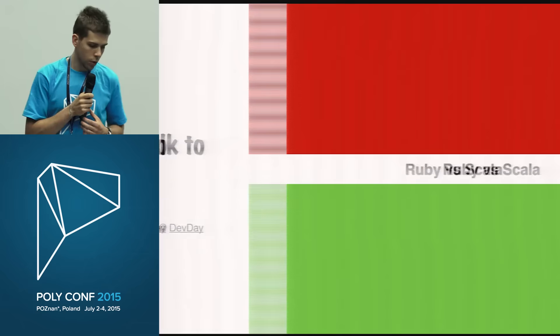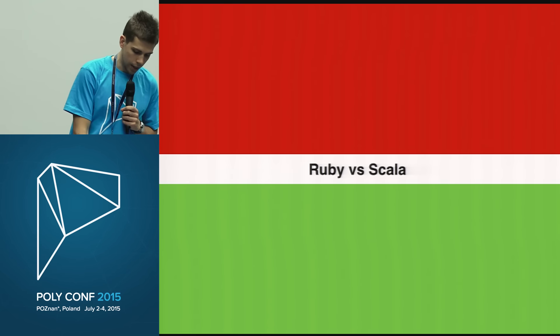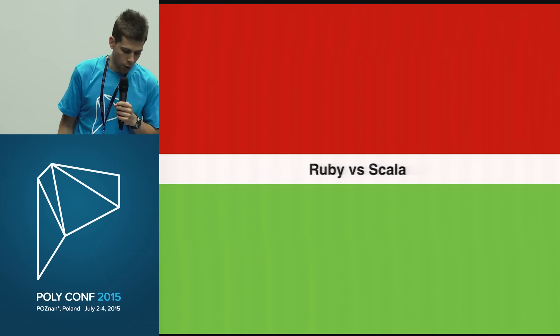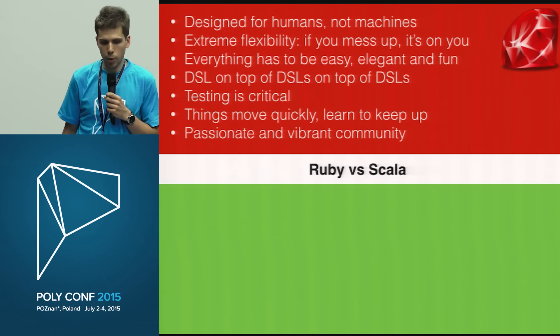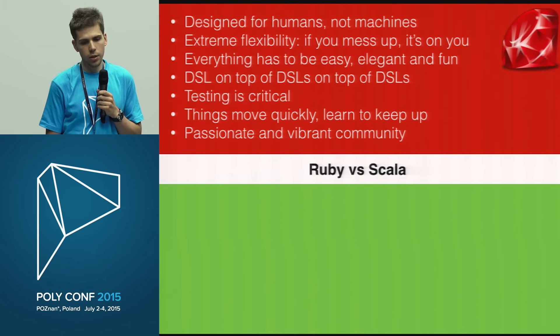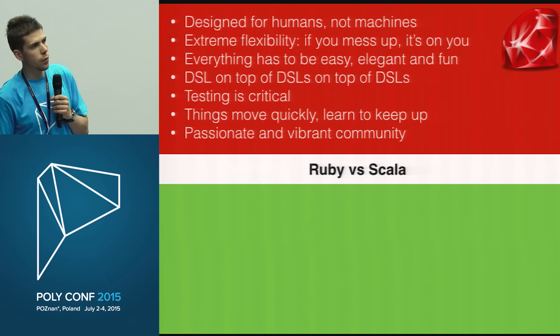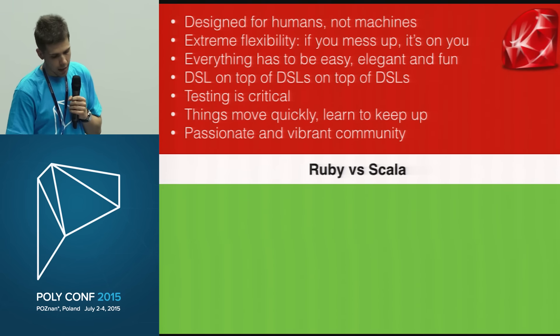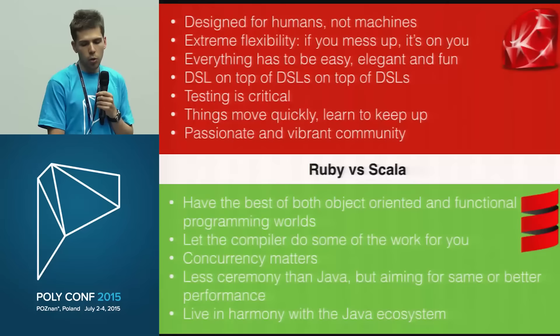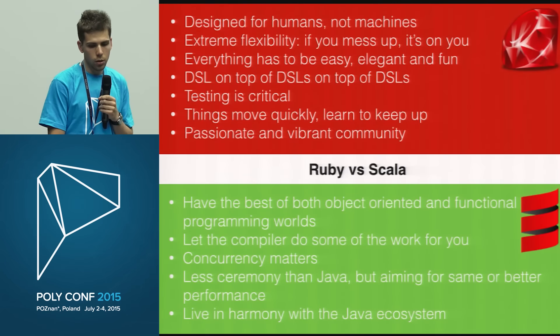I'd like to compare Ruby and Scala at the same time. These languages are created for different purposes. Ruby is pretty simple, designed for simple stuff with quite a nice DSL, while Scala is created for more concurrent programming and so on. It's, of course, based on the JVM, and it's used for more performance-intensive stuff.